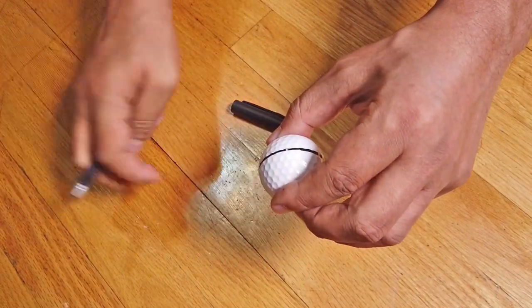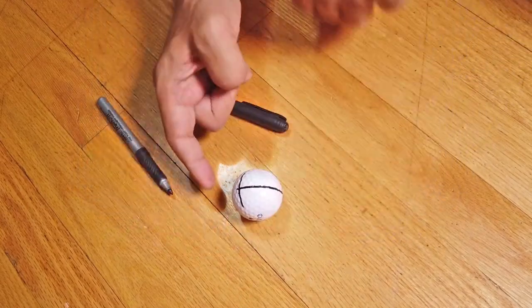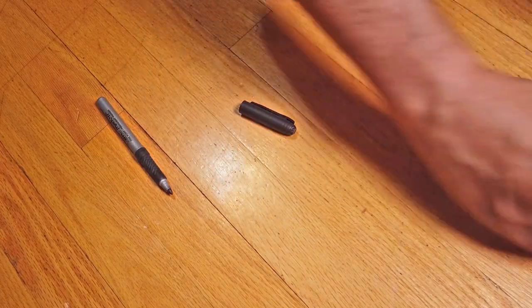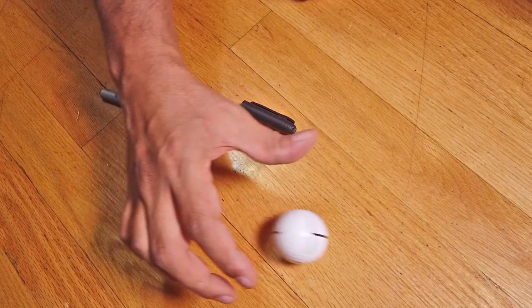Now the reason we do that is because we want to have a full line around there so that we can see if the ball is wobbling at all. So once we've hit the ball that line allows us to see what sort of wobble if any our ball is taking in the roll.